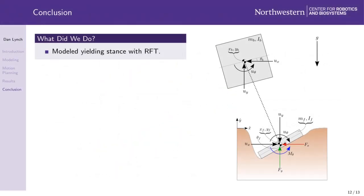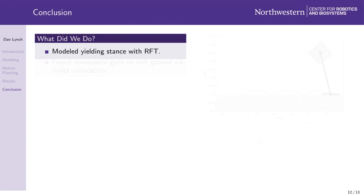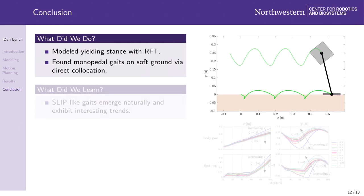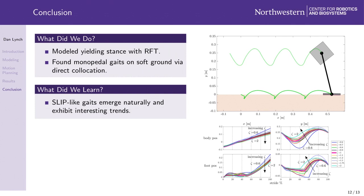To recap, we treated yielding stance as a phase of the hybrid dynamics of legged locomotion, and we modeled it with RFT. This modeling approach allowed us to find hopping gaits on yielding terrain for a range of ground stiffnesses and hopping speeds. We found that SLIP-like gaits emerge naturally, and these gaits exhibit interesting trends as ground stiffness and hopping speed vary.